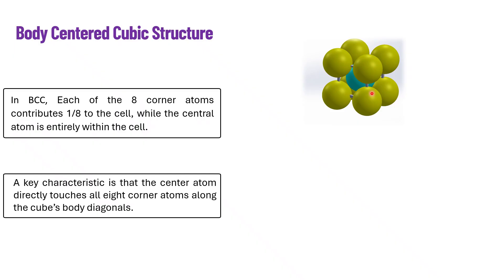A key characteristic is that the center atom directly touches all 8 corner atoms along the cube's body diagonals. Examples which possess BCC structures are like tantalum or molybdenum.